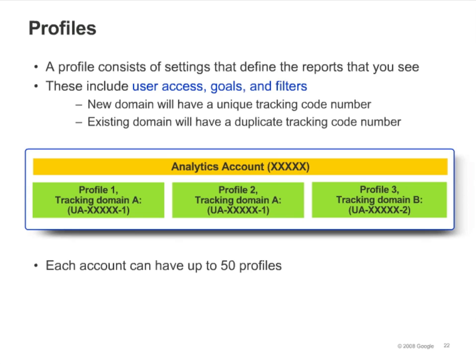Here is a schematic showing an analytics account with three profiles. The first two profiles are tracking domain A, and the third profile is tracking domain B. Notice the tracking code number for each profile — the longer number, represented by X's, is the Google Analytics account number. All three profiles have the same account number. Profiles 1 and 2 each have a dash 1, while profile 3 has a dash 2. This smaller number is the property number. Profiles 1 and 2 are tracking the same domain and have the same property number — they can be referred to as duplicate profiles. Profile 3 is tracking a different domain and has a different property number.